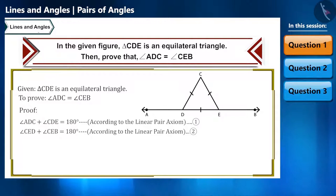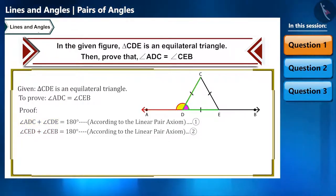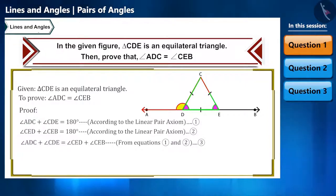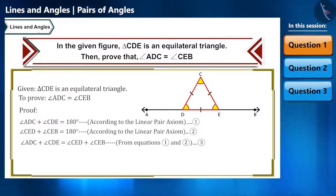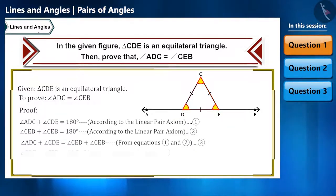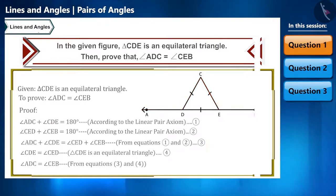If we pay attention to both equations, the right-hand side is equal, so the left-hand side will also be equal — that is, angle ADC plus angle CDE equals angle CED plus angle CEB. Since triangle CDE is equilateral, all its angles are equal, so angle CDE equals angle CED. Hence angle ADC equals angle CEB.